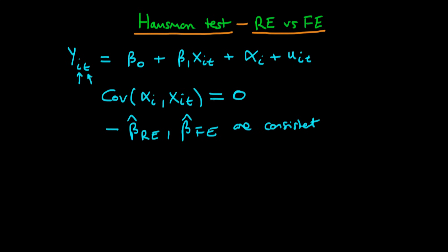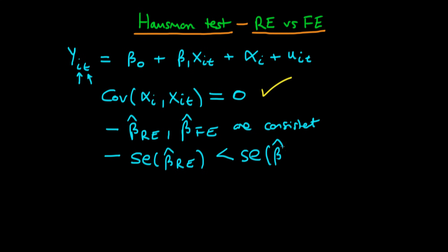In the circumstance where this condition is satisfied — where the covariance of alpha_i with x is zero — not only are random effects and fixed effects both consistent, but random effects is also more efficient than fixed effects. The standard error of random effects should be less than the standard error obtained via fixed effects.